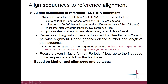The speed of this process depends on the number of sequences to be aligned, but also on the length of sequences. So in order to speed up this alignment process, it is a good idea to indicate the region of the reference which matches the region that you PCR amplified. For example, if you amplified the V2 region, then you can focus this alignment to the V2 region in the reference.